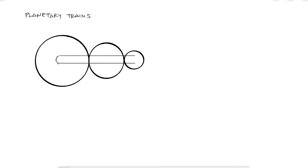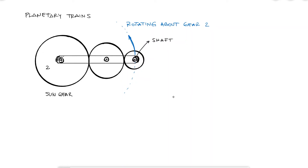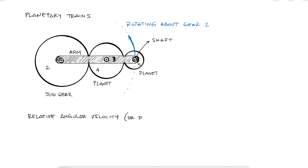Going back to the gear trains — when some gear axes are allowed to rotate about others, which physically means that the shafts that hold the gears are rotating about other gears, we call these trains planetary. Planetary trains always include a sun gear, an arm or a planet carrier, and one or more planet gears. The relative angular velocities of a gear with respect to the arm are given by the typical relative speed definition, which is the subtraction between the rpms of the gear and the arm. For example, n23 is n2 minus n3. We could do the same for the speed of gear 5 relative to the motion of the arm: n53 is n5 minus n3.